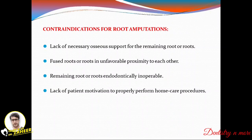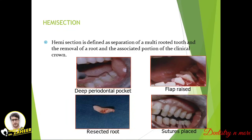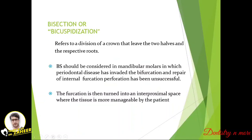Hemisection is defined as separation of a multi-rooted tooth and the removal of a root along with the associated portion of the clinical crown. The tooth is completely split from the root end to the crown tip. When there is a deep periodontal pocket, a flap is raised, the tooth is resected, and sutures are placed. Bicuspidization refers to division of the crown leaving two halves with their respective roots.